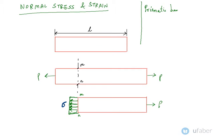Let us look at this topic of normal stress and strain. Let us look at this prismatic bar. What is a prismatic bar? A prismatic bar is a straight structural member with a constant cross-section area.